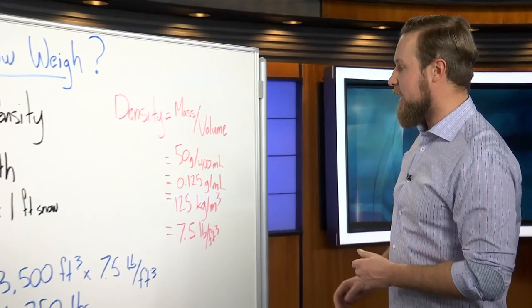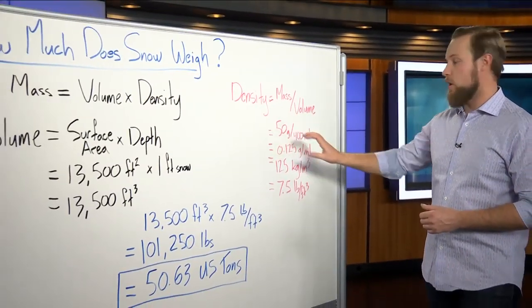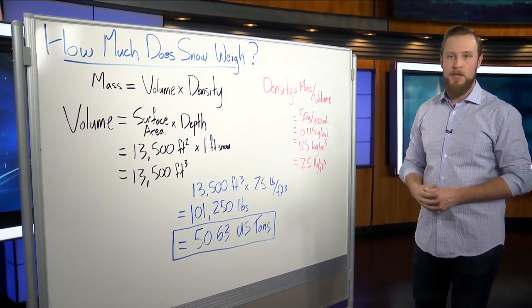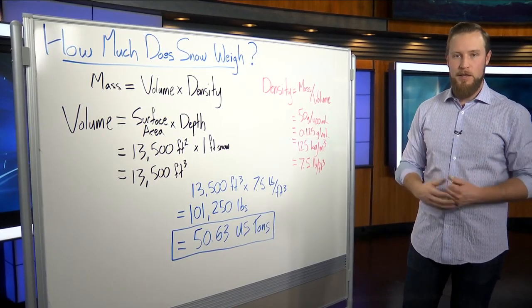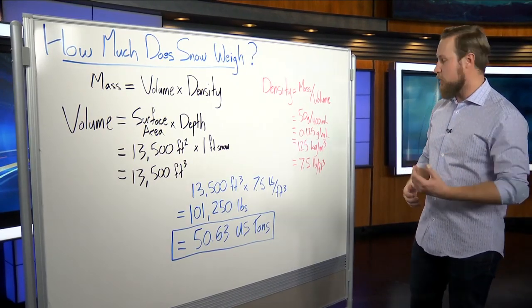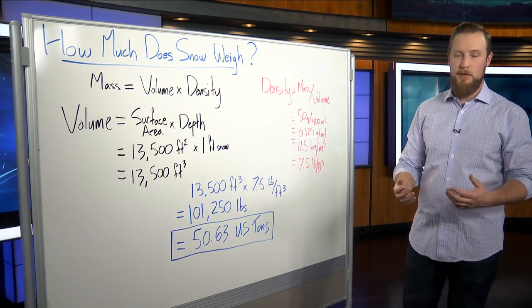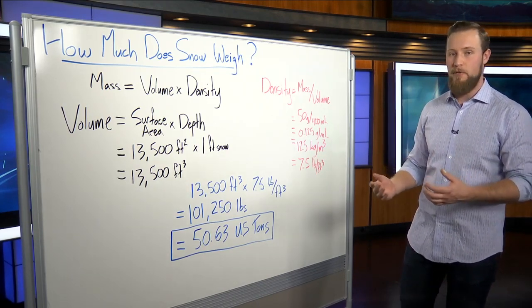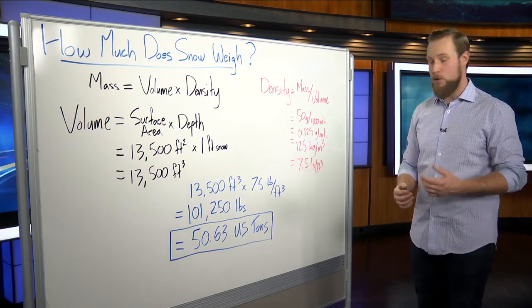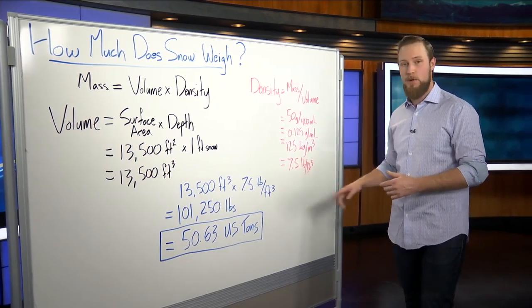Wet snow is going to be more dense than drier snow, which falls at colder temperatures. Out there right now, the results I got were 50 grams of water content in 400 milliliters of snow. Now, obviously, these are metric units. Through some calculations there, we can take this down to get kilograms per meters cubed, which is very easily converted into pounds per square feet. The result of that conversion is 7.5 pounds per square feet.